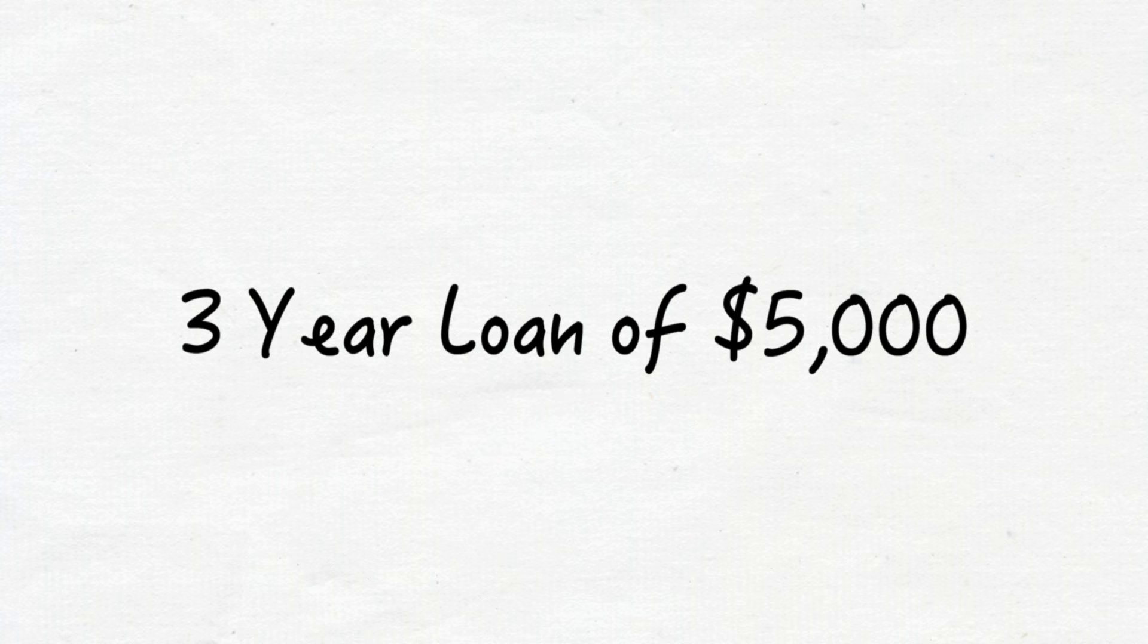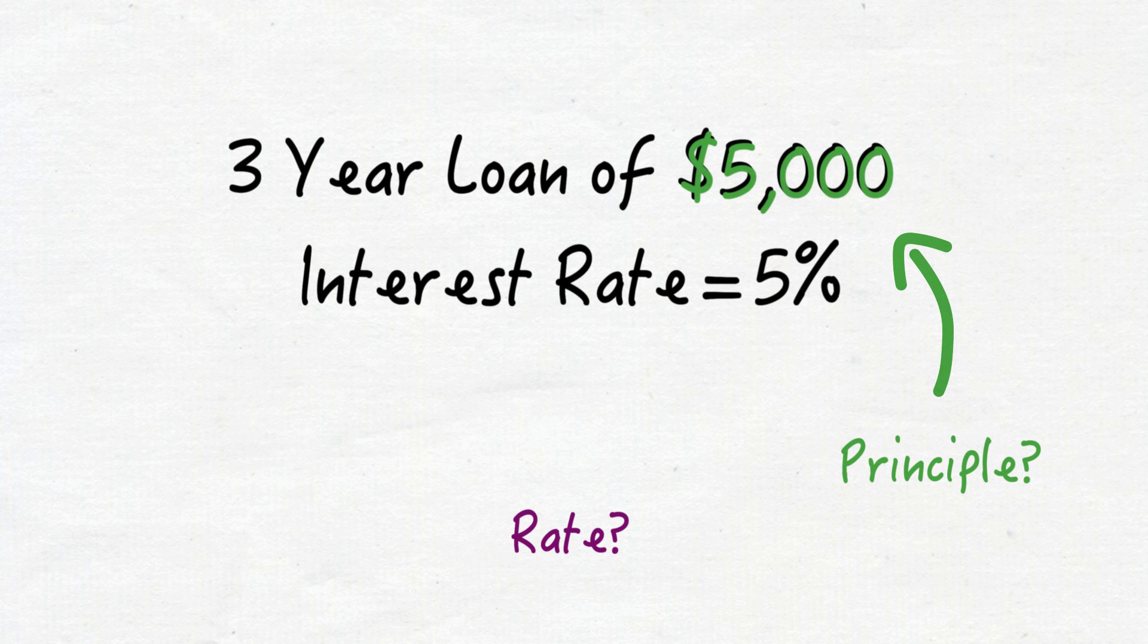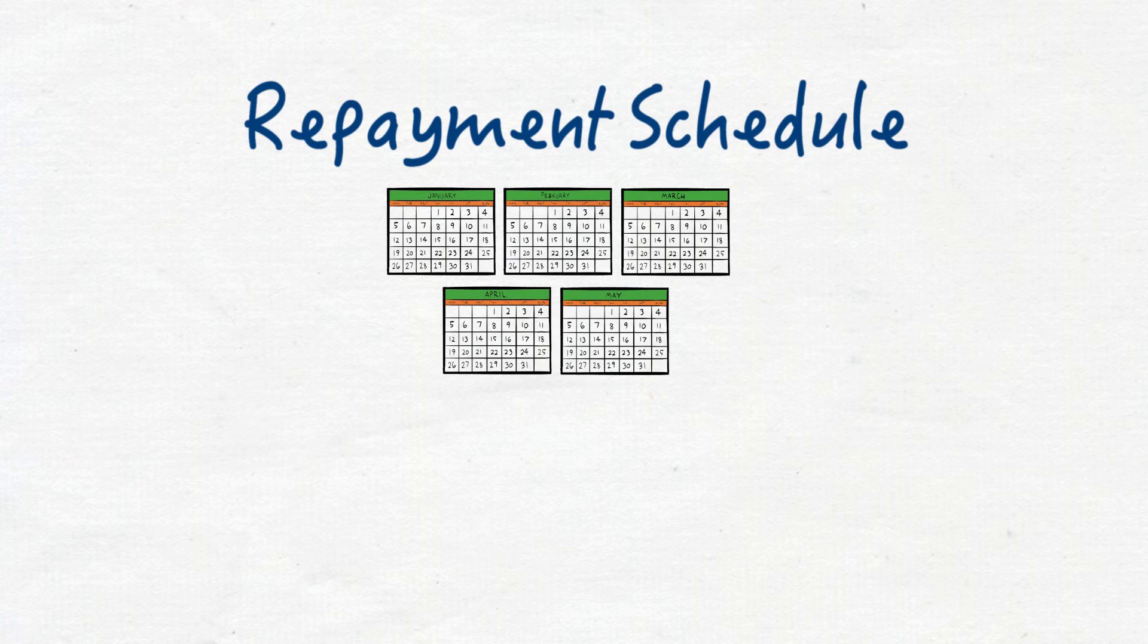That's it. Let's try it out. Say you had a 3-year loan of $5,000 and the interest rate was 5%. What would be the principal? $5,000, the amount of the debt. What rate is the interest? 5%. How long is the term? 3 years.